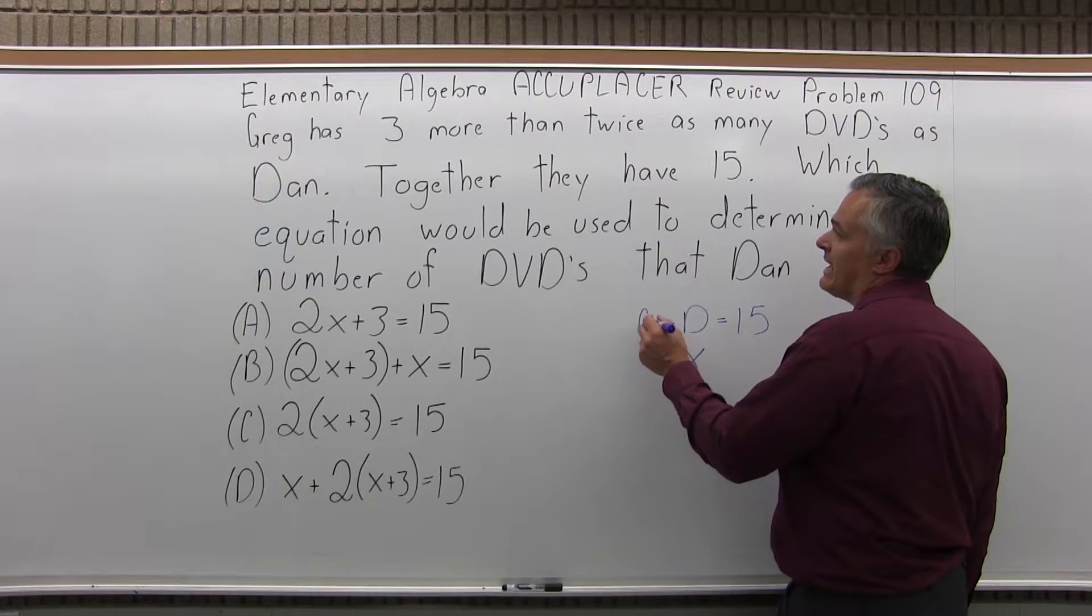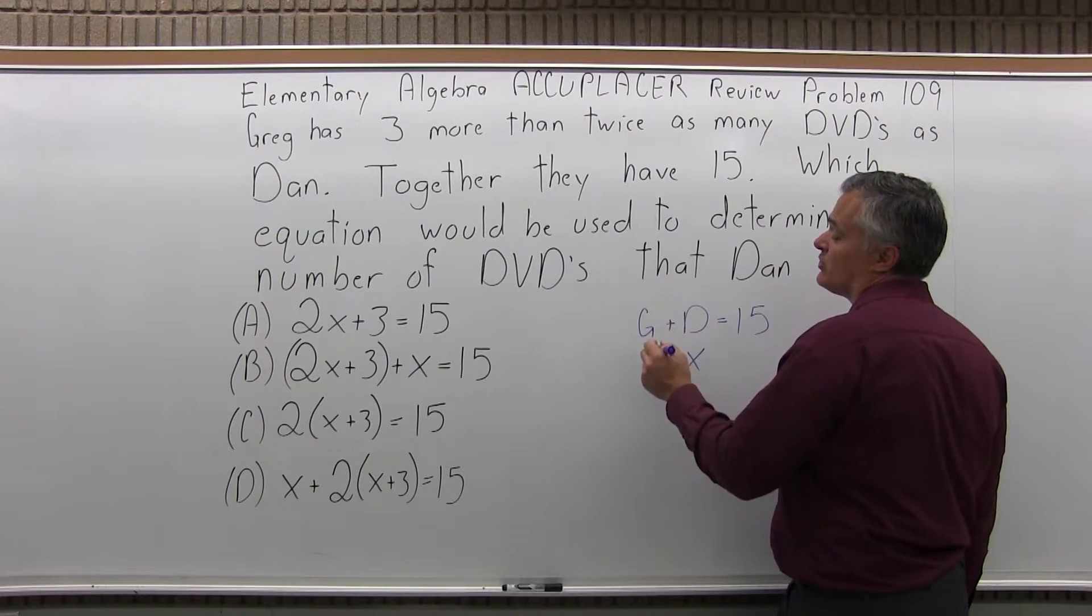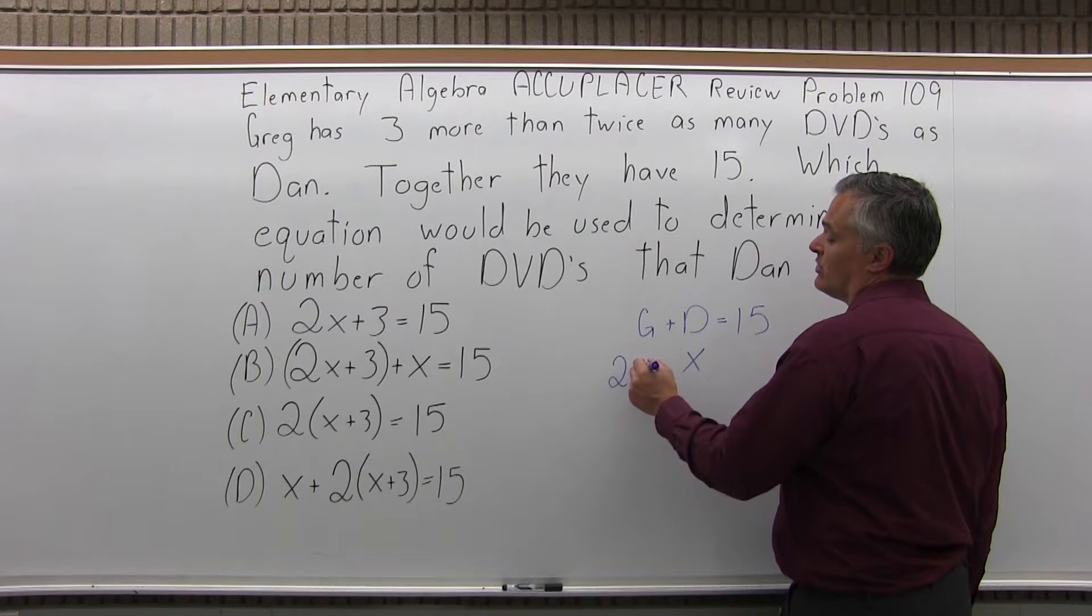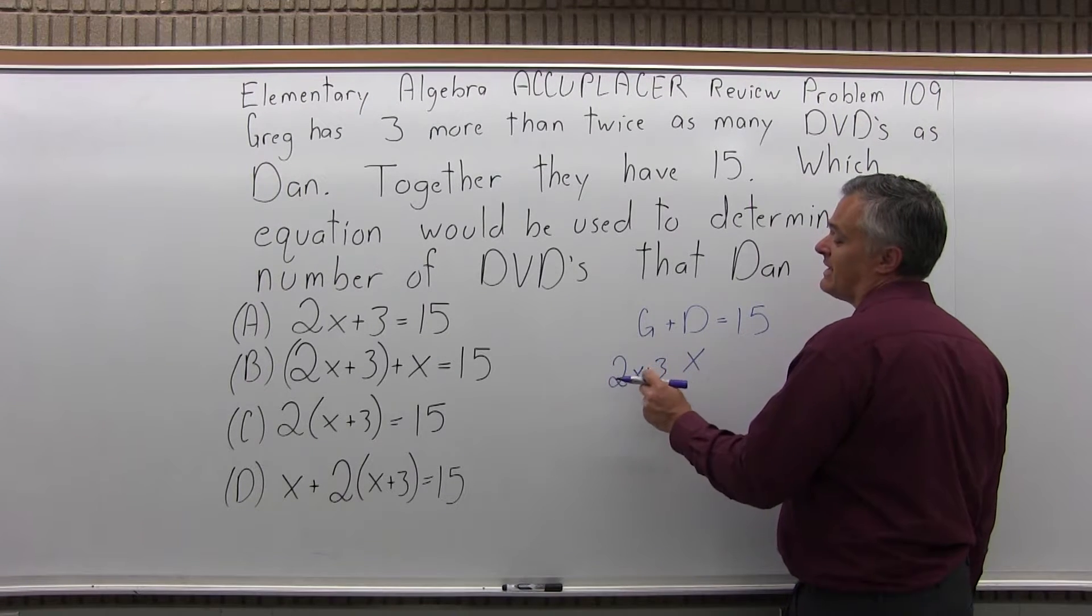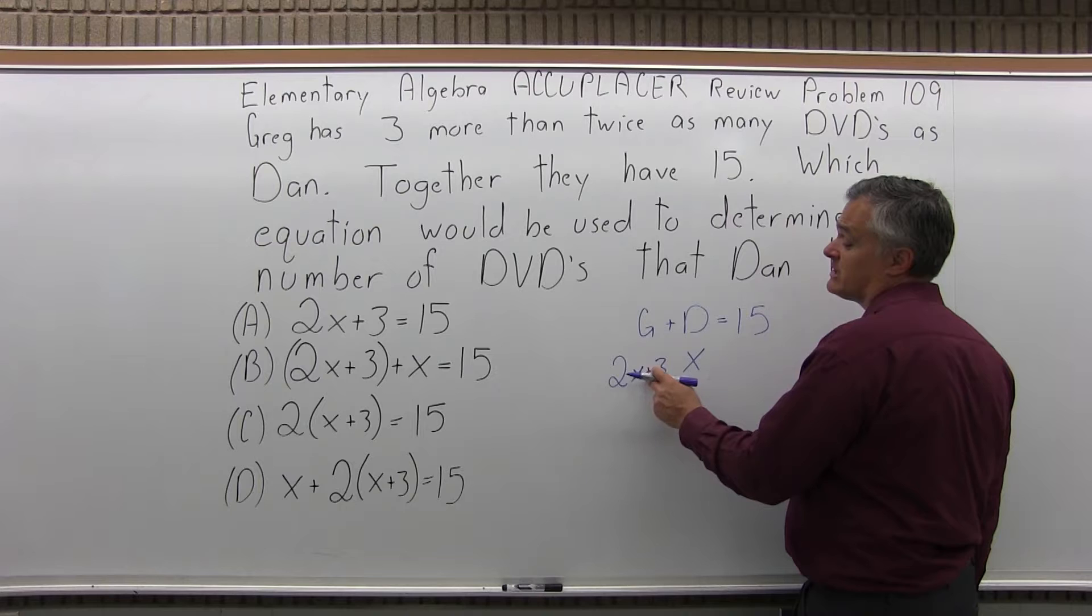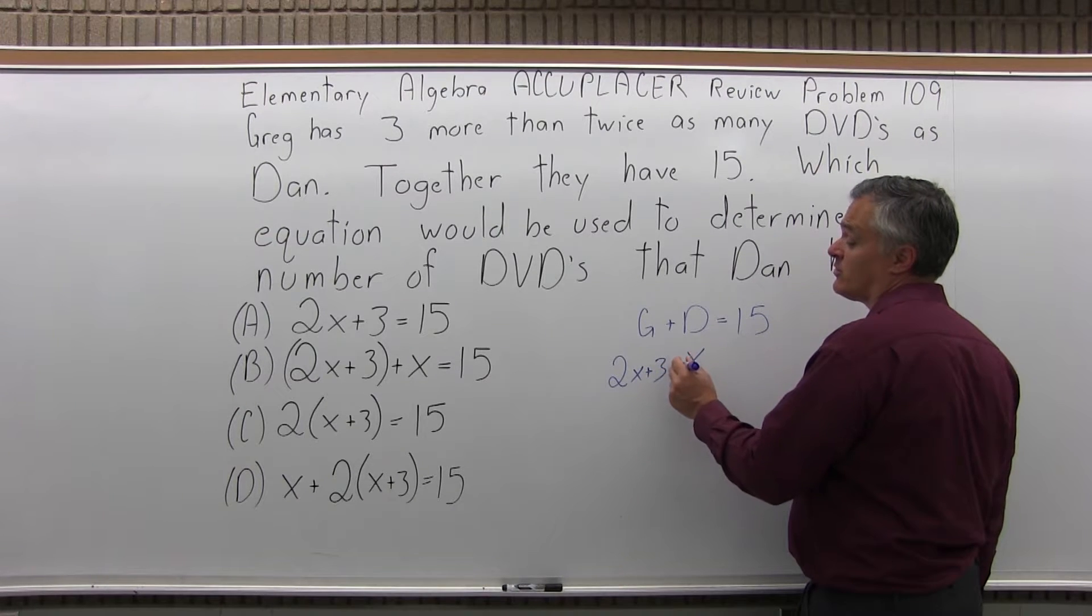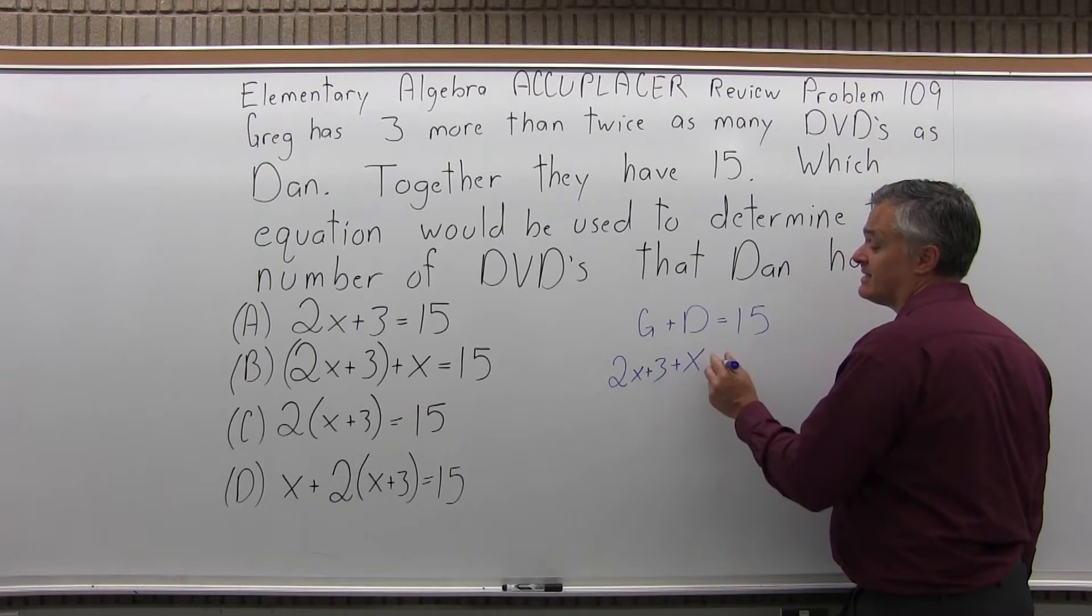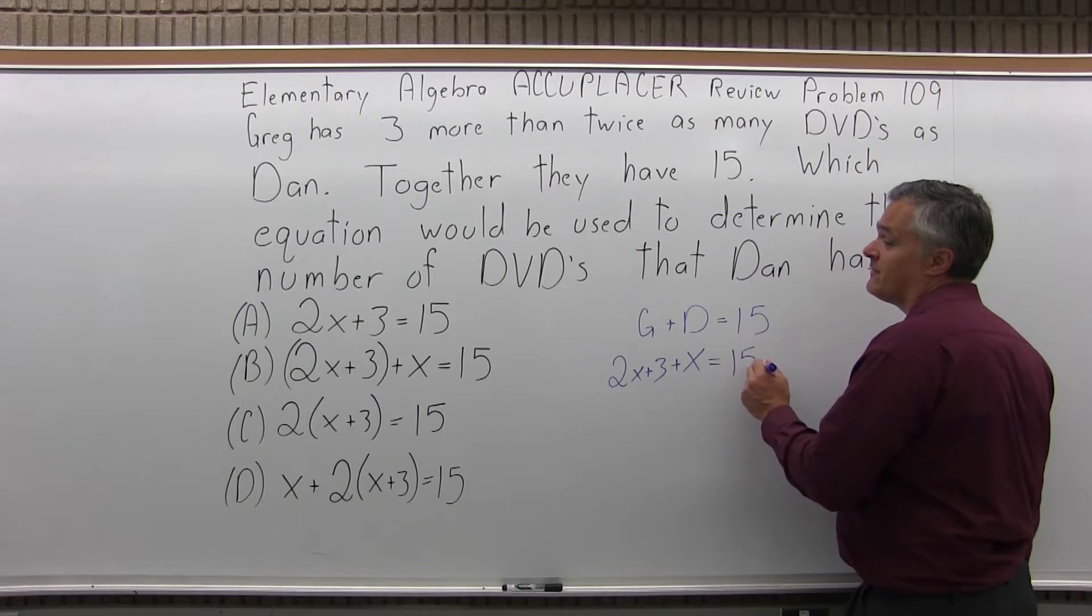Greg has three more than twice as many as Dan has. So, three more than twice as many would be two X, twice as many, plus three. That's three more than twice as many plus the X that Dan has, should add up to 15.